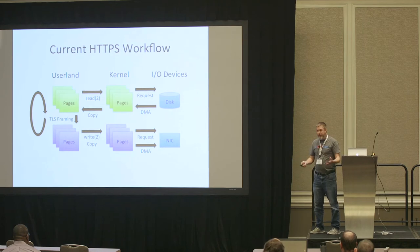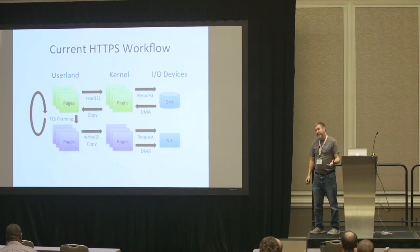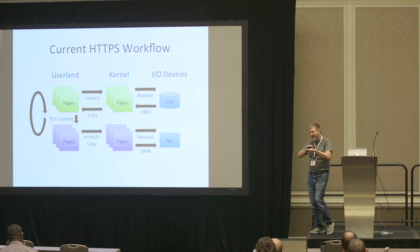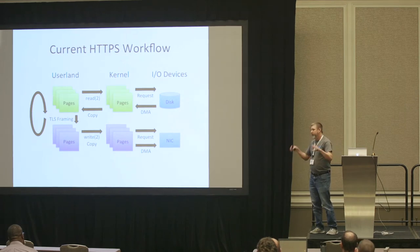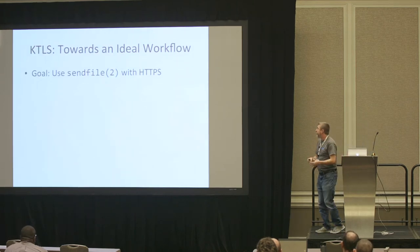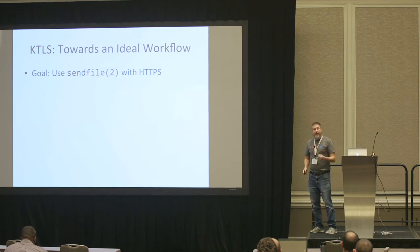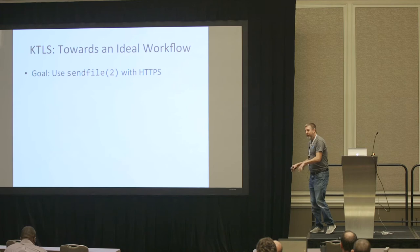Netflix ran into this: they could push 100 gigabits over plain HTTP, but they had a mandate to switch all their traffic to TLS. So they had to figure out how to push 100 gigabits or more using TLS. The goal of KTLS — kernel TLS — is to get back to a more ideal workflow that's more like sendfile. In practice, it means finding a way to use sendfile for a connection using TLS. That's what the KTLS work now in FreeBSD 13 is oriented around: how do we provide a way to use sendfile on a TLS connection?